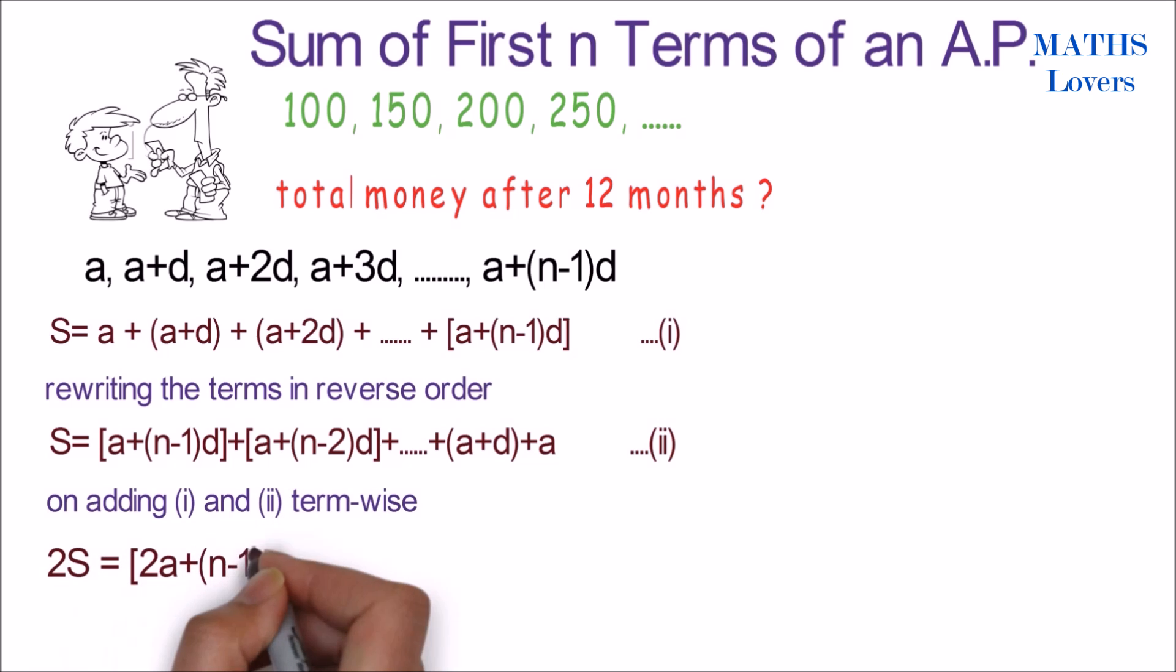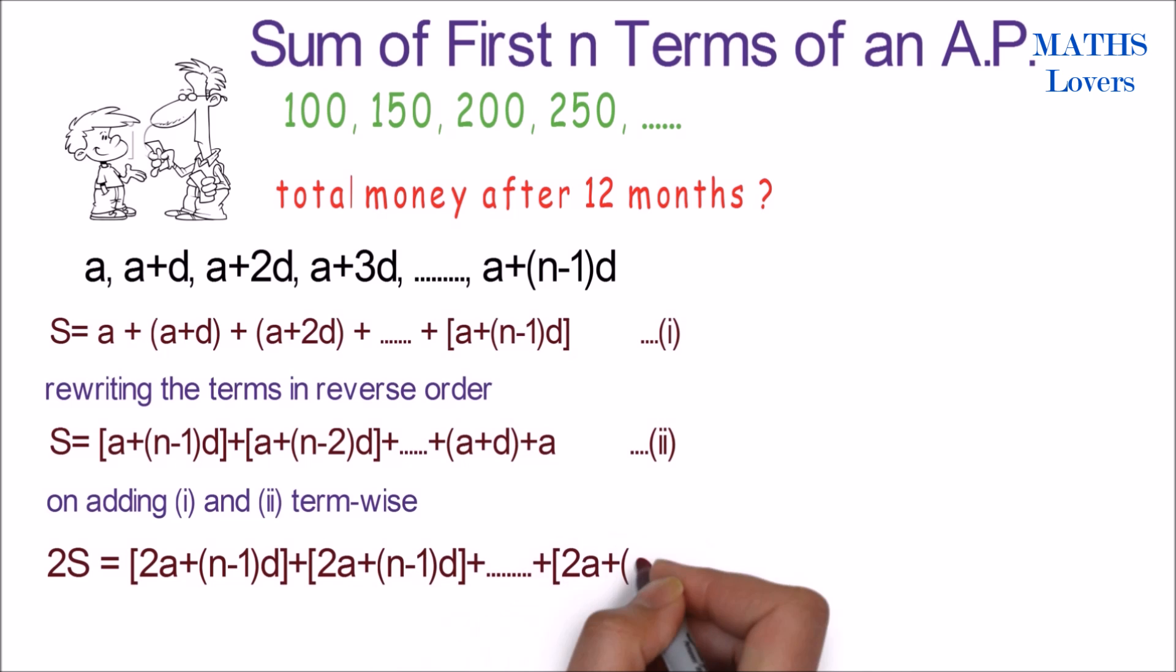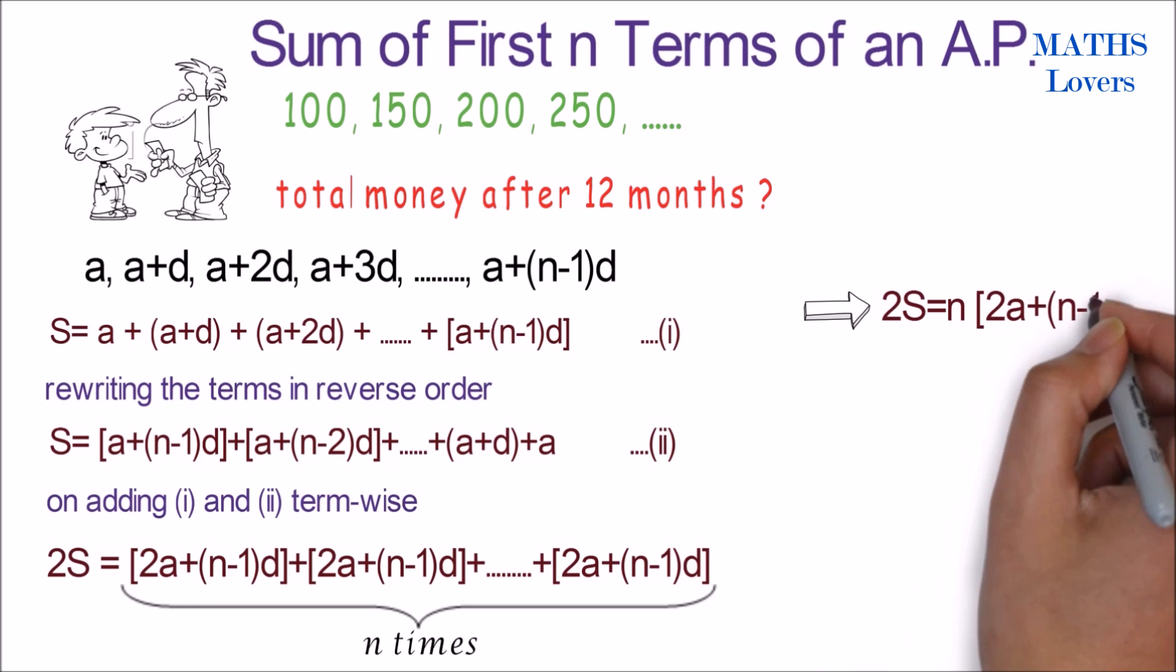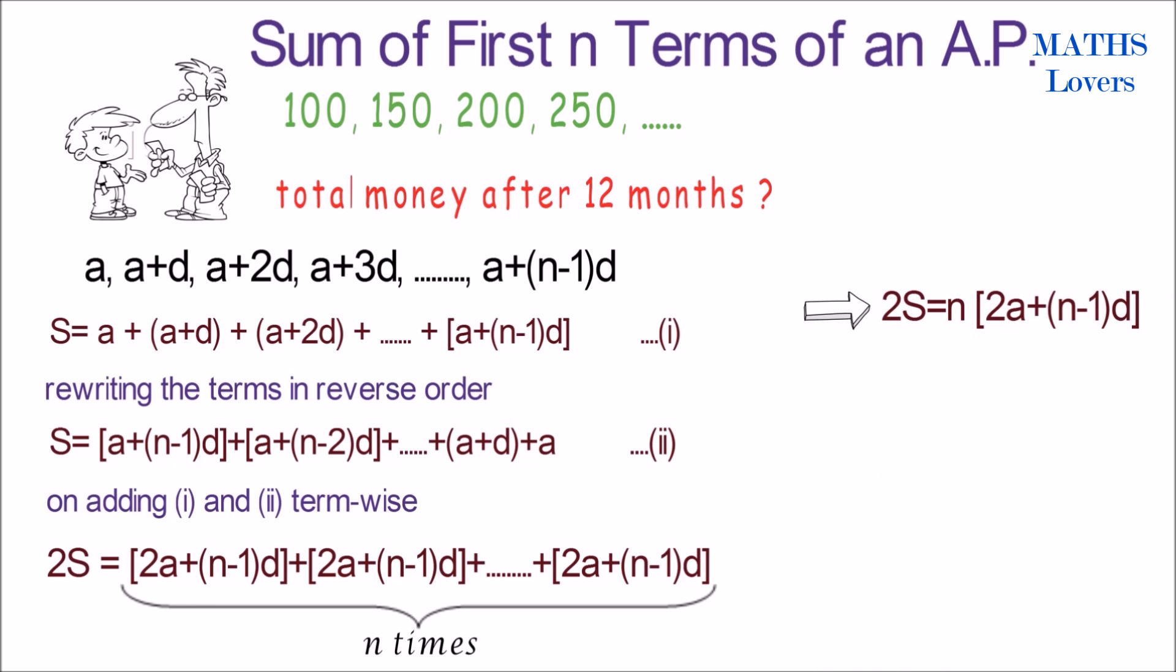Then we will get every time 2a plus n minus 1 times d. That's why 2S equals n times 2a plus n minus 1 times d. Therefore, S equals n by 2 times 2a plus n minus 1 times d. So this is our formula for calculating sum of first n terms of AP. If we know a and d, then we can calculate by this formula easily.